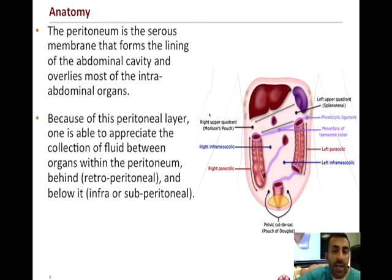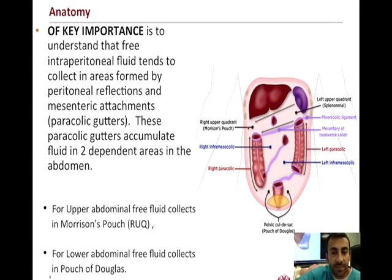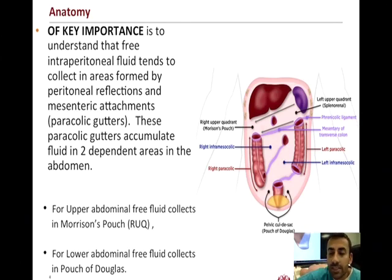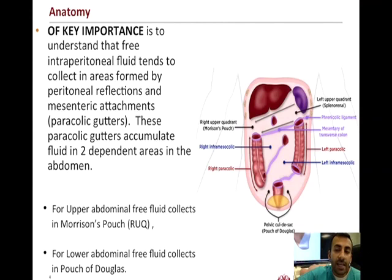That makes the right upper quadrant a very important view in the FAST exam, because it is the dependent area where, due to these pericolic gutters, free fluid from abdominal injury above the umbilicus will collect in this space. Similarly, the most dependent area for injuries below the umbilicus is the pouch of Douglas, which is a free fluid collection that occurs below the bladder. The right upper quadrant and the suprapubic views are the two key views, as one will be positive when you have a large amount of free fluid collection.